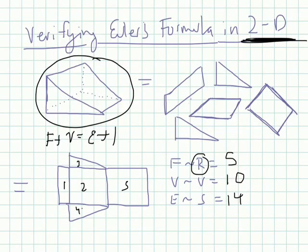And then our edges, we're actually counting segments now because we're in two dimensions here. So looking for segments, we have one segment, two, three, four, five, six, seven, eight, nine, ten, eleven, twelve, thirteen, fourteen. So that's where the fourteen comes.